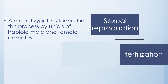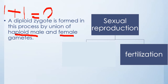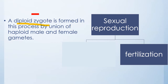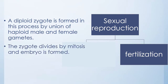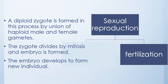In fertilization, one haploid male gamete and one haploid female gamete unite. If we say one plus one, we get two — meaning a diploid zygote is formed. The zygote then divides by mitosis and an embryo is formed. The embryo develops to form a new individual.